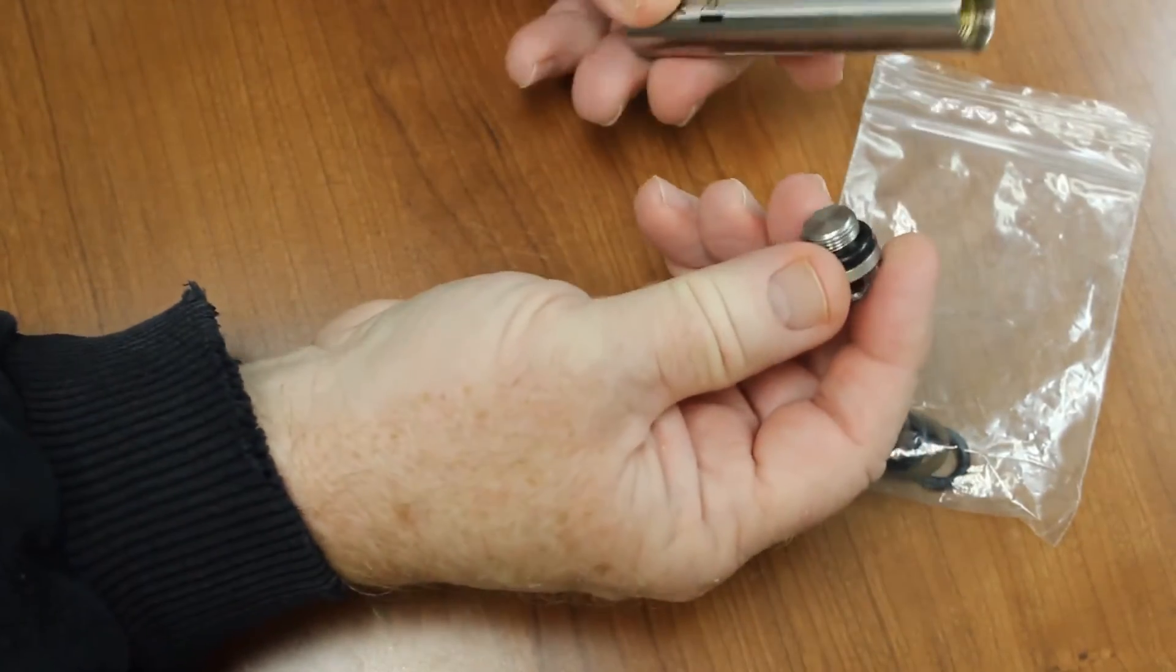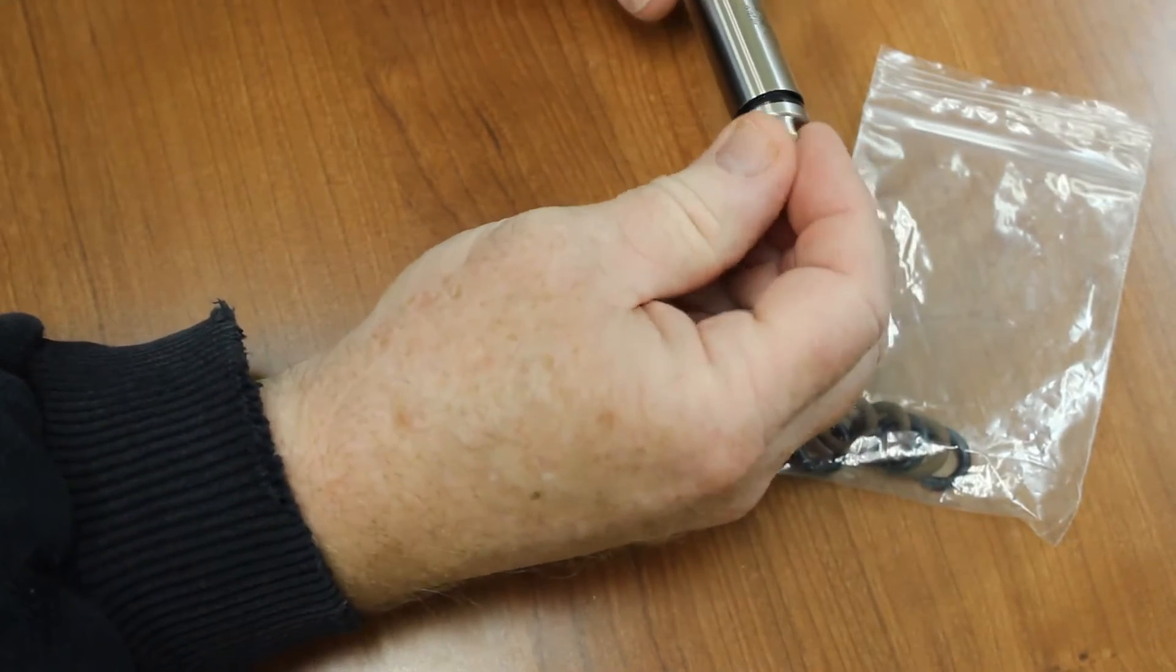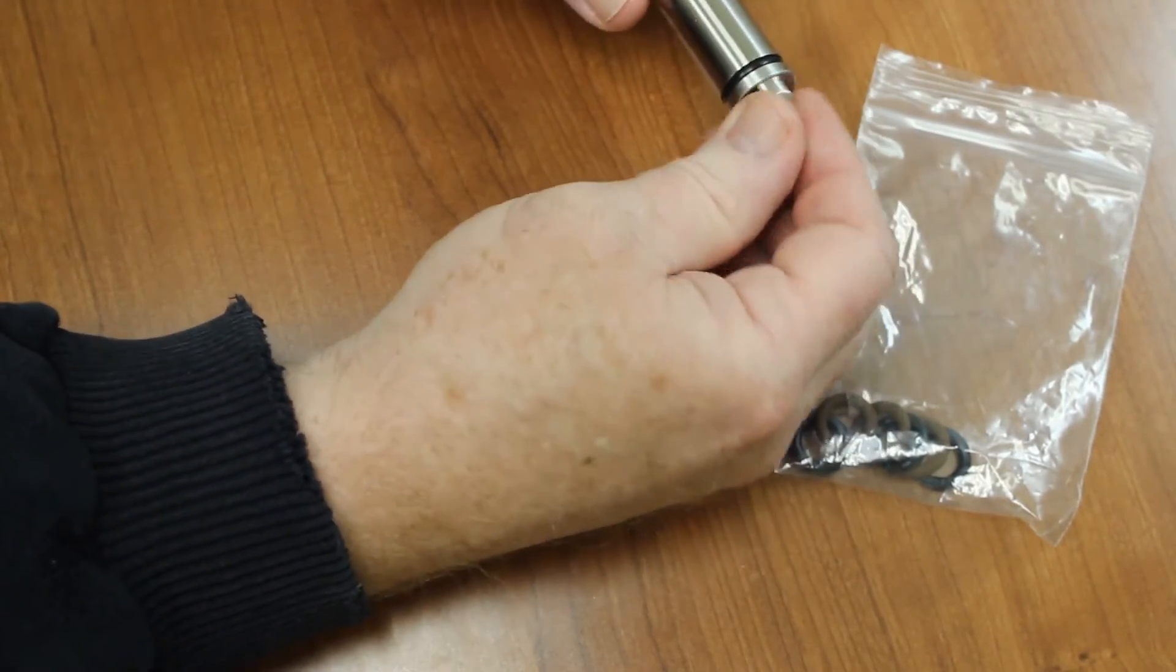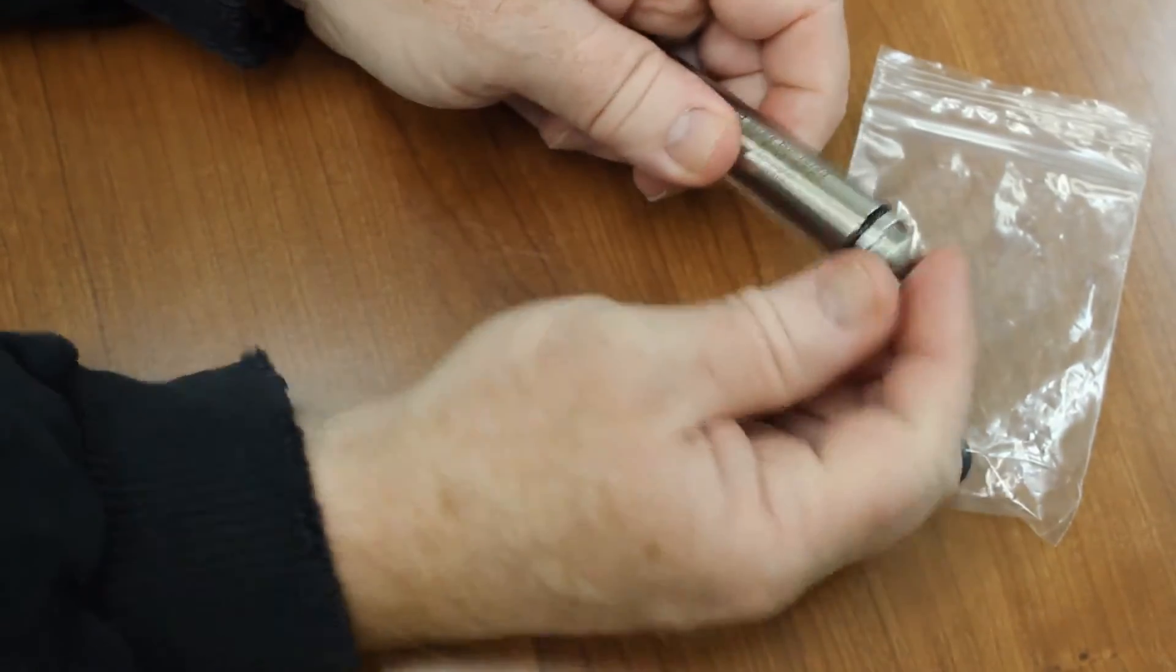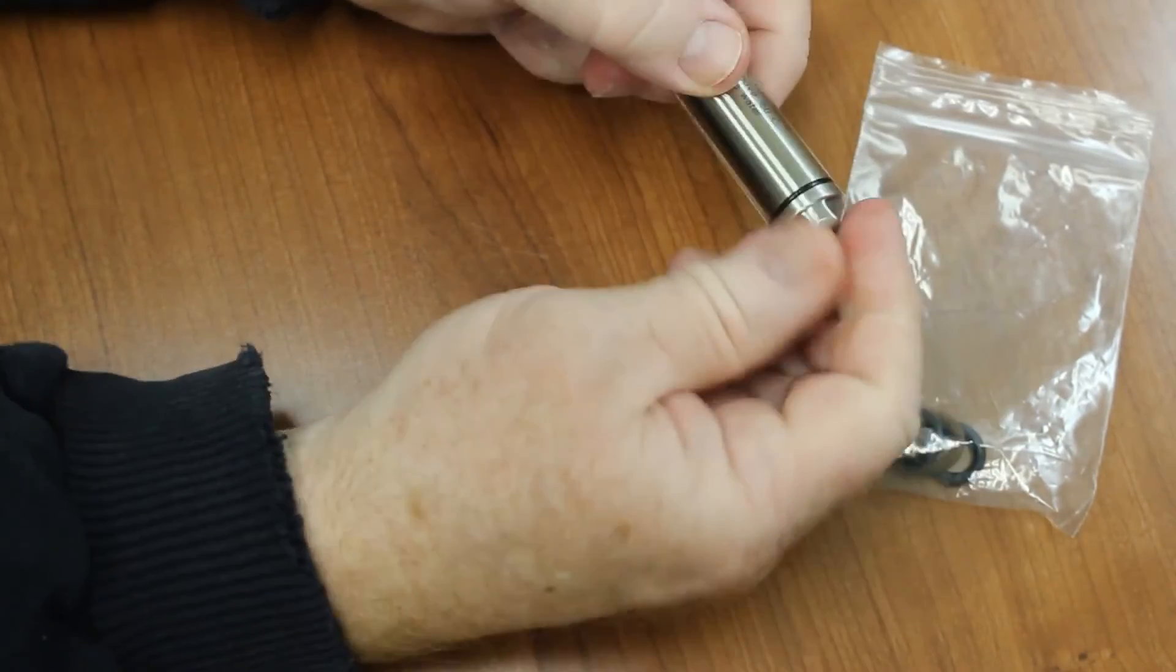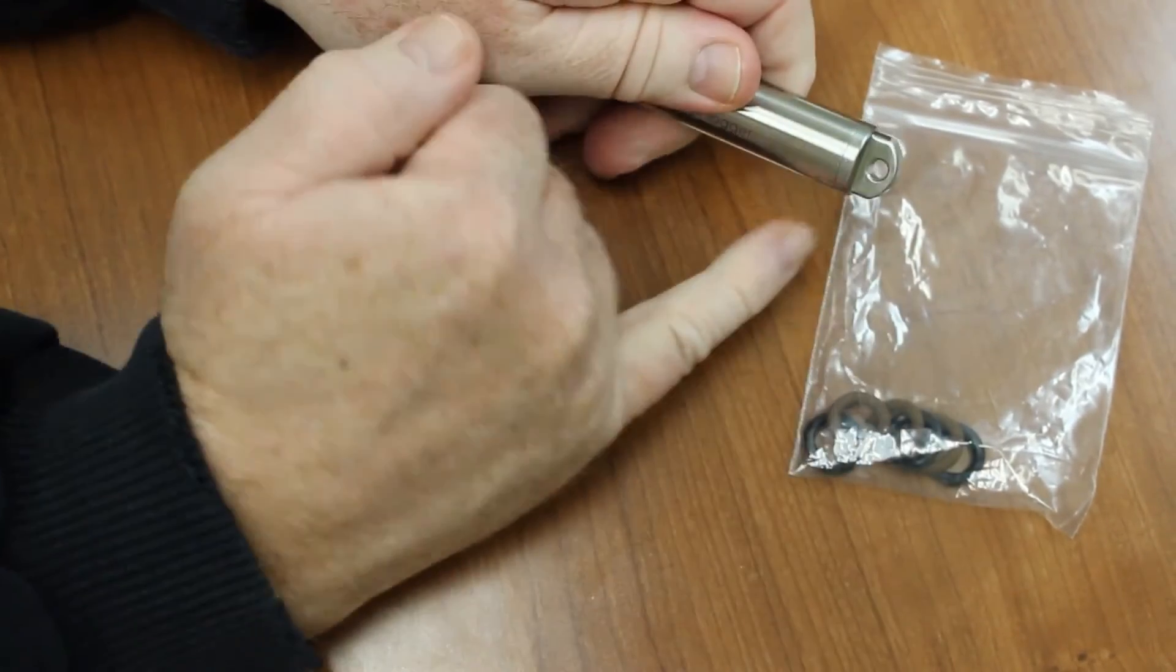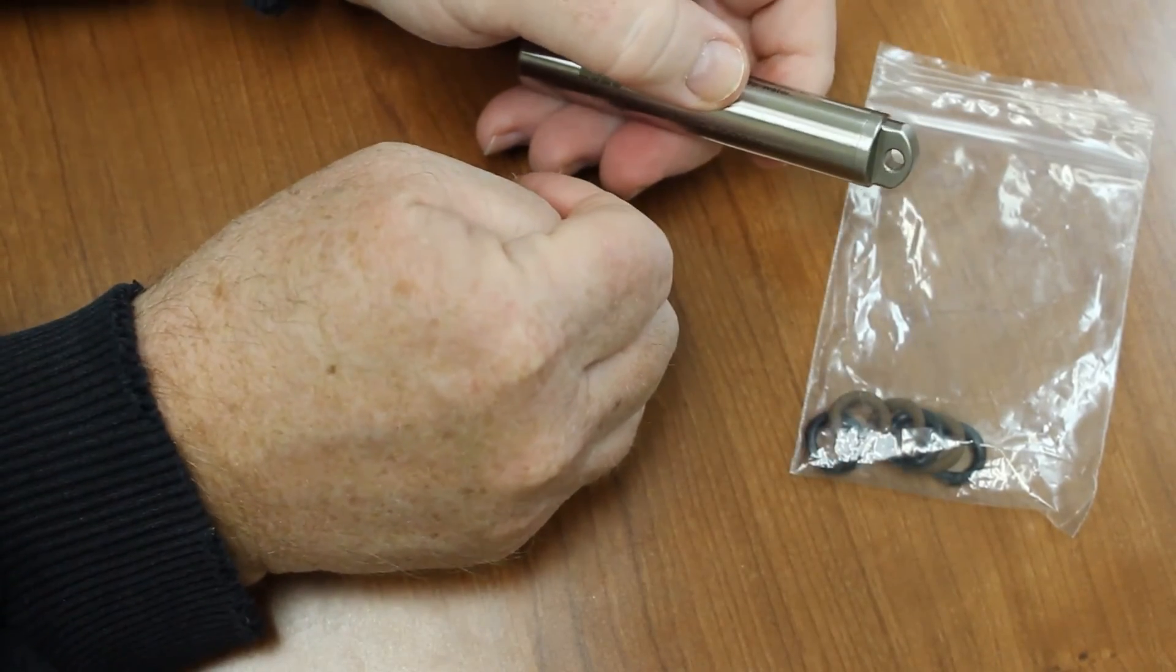Also remember, when you reassemble the data logger, you want to make sure that this is bottomed out. You want to make sure that the cap is bottomed out to the body, so that it's completely sealed. You don't want to leave it like that. You want to make sure that it's tight, right there, so it's nice and snug, and now we're ready to deploy our logger.